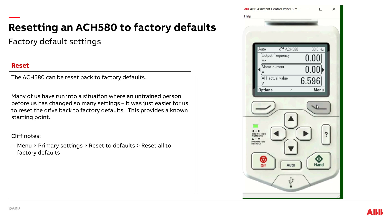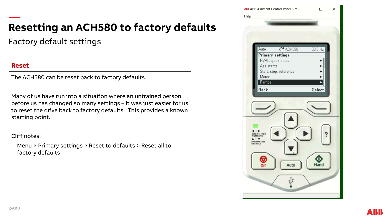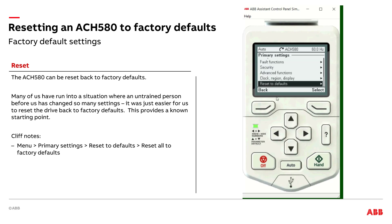So what we're going to do is go into the menu, go into primary settings, and select that. We're going to scroll all the way down — or a pro tip would be to just hit the up arrow and it would cycle all the way to the bottom. I'm going to scroll down here to reset the defaults and hit select.